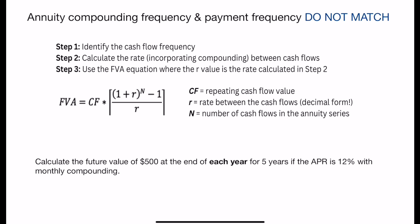The steps that we're going to go through for each one of these problems is first we want to identify the cash flow frequency. Then using that frequency, we want to calculate the rate that incorporates in compounding between each one of the cash flows. So we're always going to make the rate match whatever the cash flow frequency is. Then last up, we want to use the future value equation where r is that rate that we just calculated in step two between the cash flows.